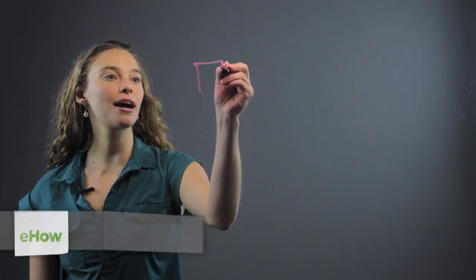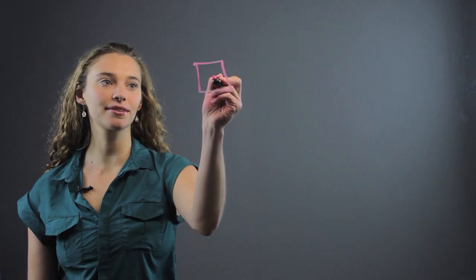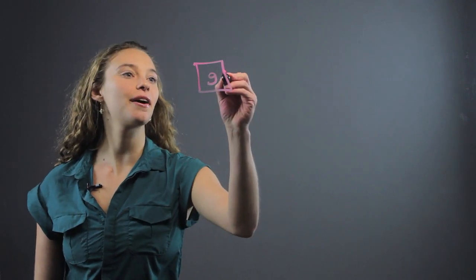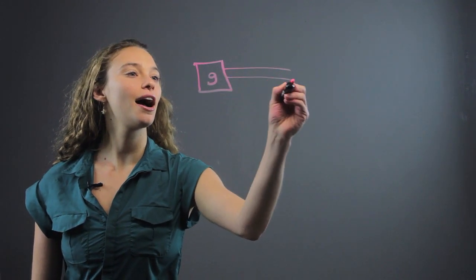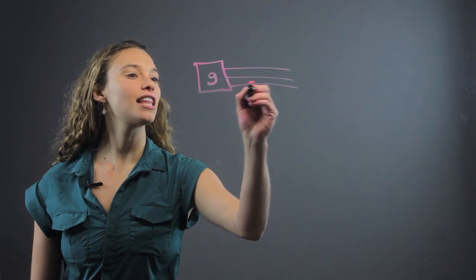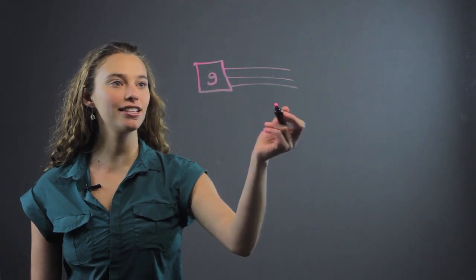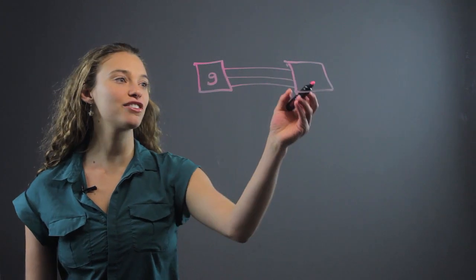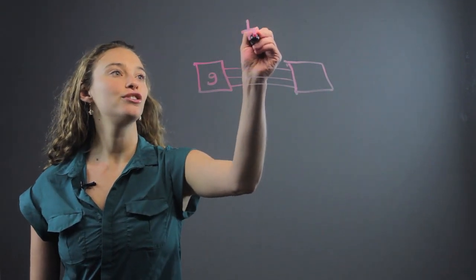So we use triple beam balance a lot to measure grams. This could be hundreds of grams. There's three different lines on the triple beam balance, and make sure when you are collecting your data, when you're measuring, that you always measure twice.